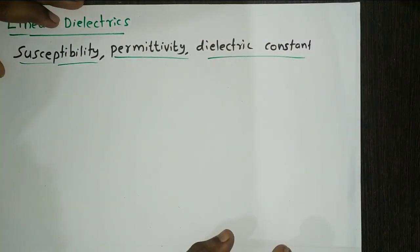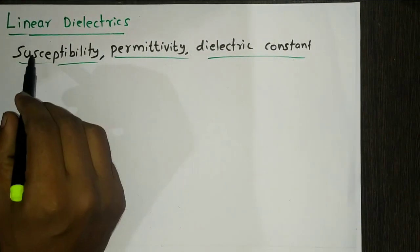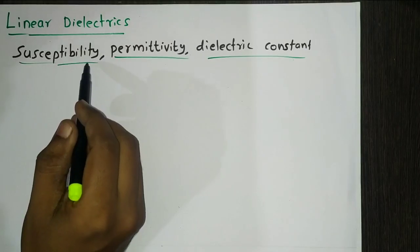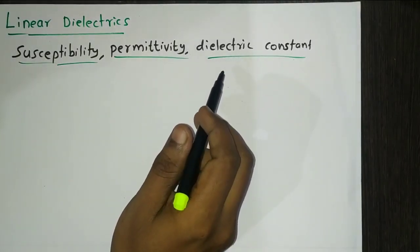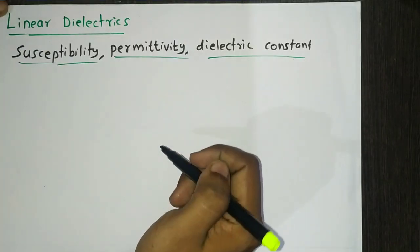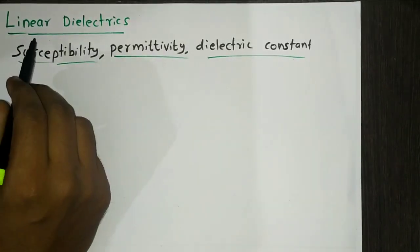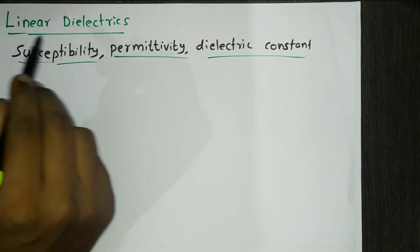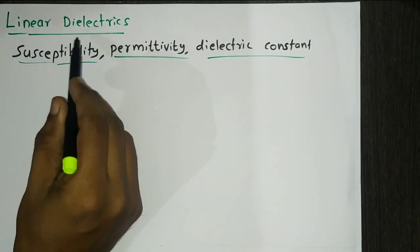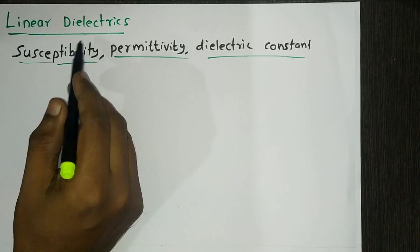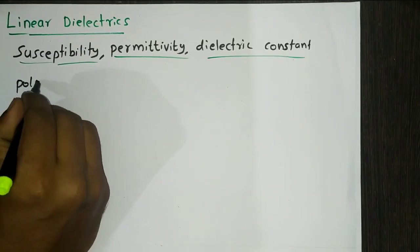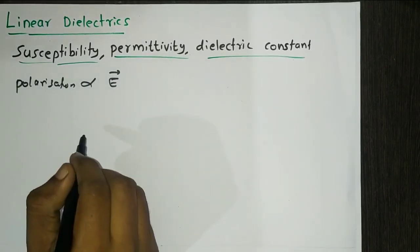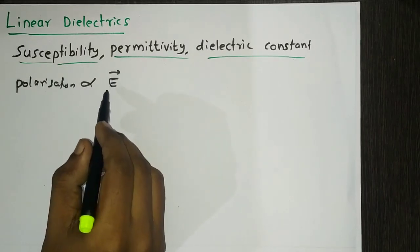The topic of today's discussion is linear dielectrics: susceptibility, permittivity, and dielectric constants. Linear dielectrics are materials that do not have polarization themselves, but if they are placed in an external electric field, they develop a polarization P that is proportional to the electric field, provided the electric field is not too strong.